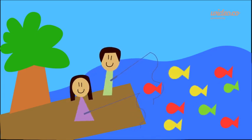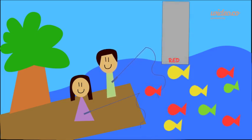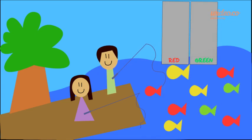Every time we catch a red fish, we can put it into the red column. So that means when we catch green fish, they go into the green column?